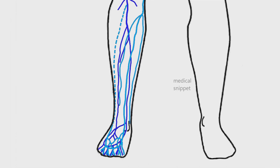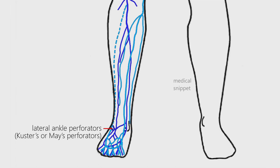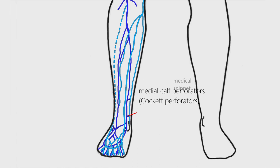The medial and lateral ankle perforators drain blood from the deep system to the greater and small saphenous veins respectively. The lateral ankle perforators are also called Cockett or May perforators. In the leg, the medial calf perforators, also known as Cockett perforators, are the important ones. These connect the posterior arch vein of the greater saphenous vein to the posterior tibial vein.